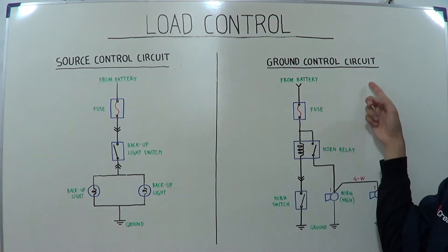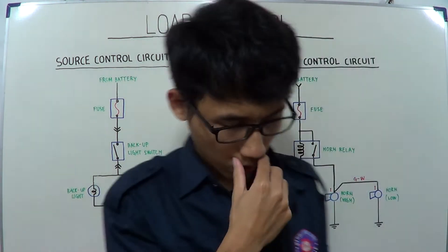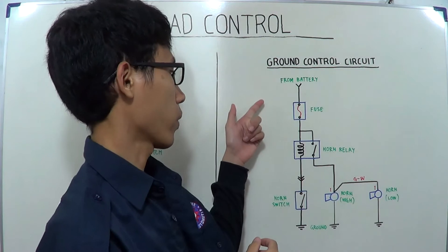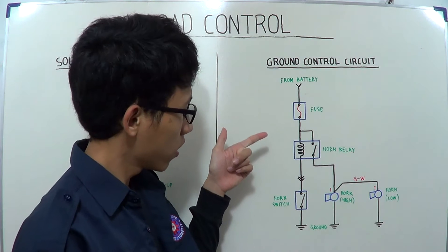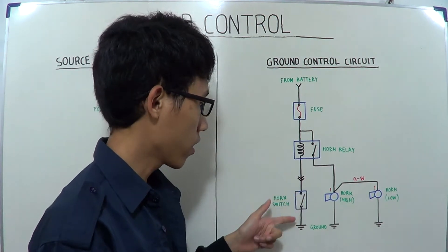And the ground control circuit, in the ground control circuit, the switch is located between the load and the ground.